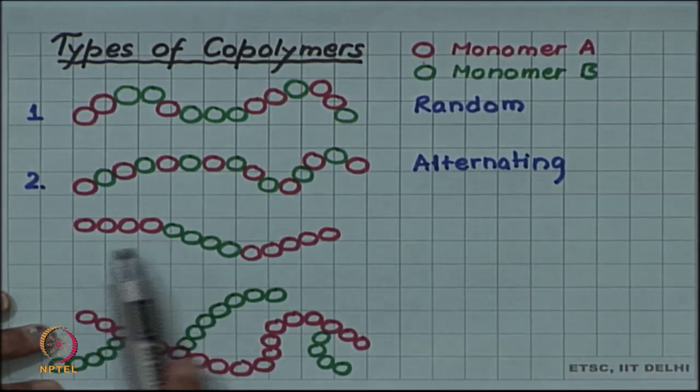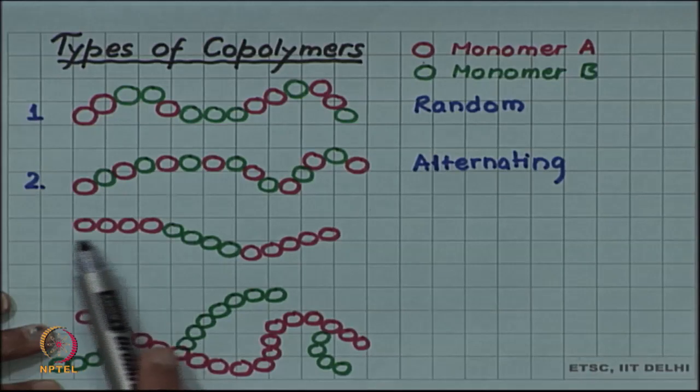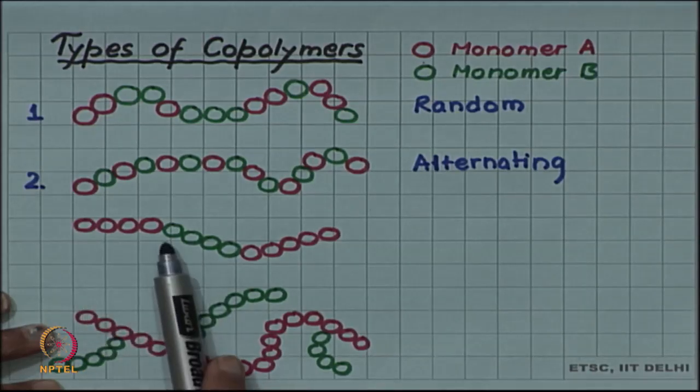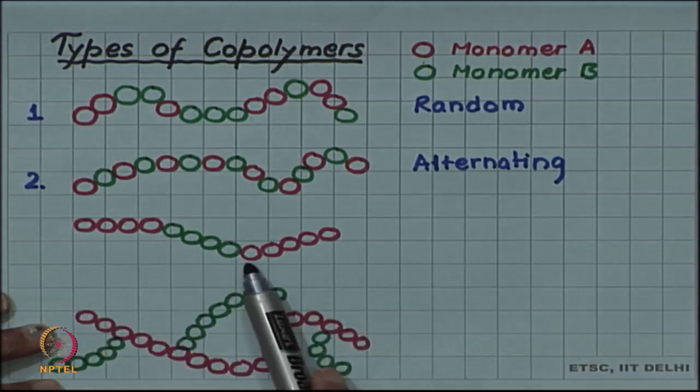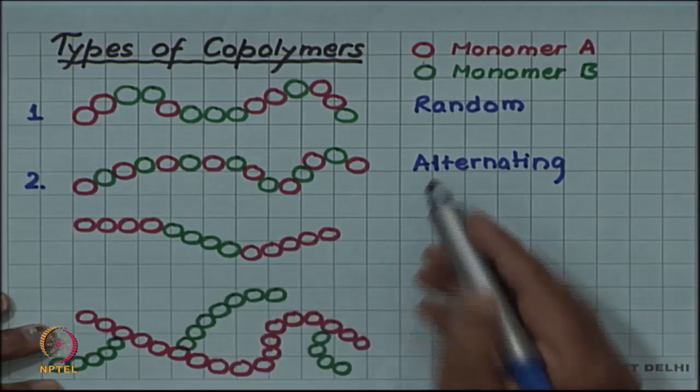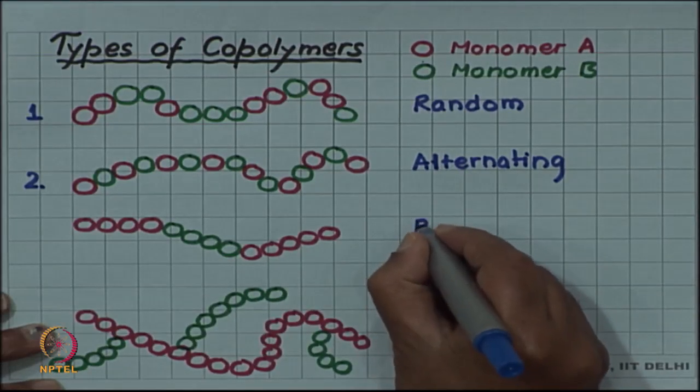If you have large blocks of A monomers and then followed by B monomers and then A monomers, then this is called a block copolymer.